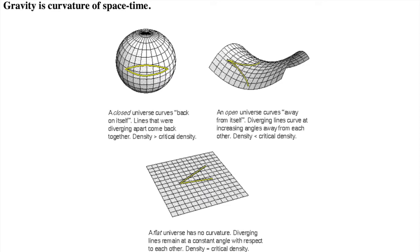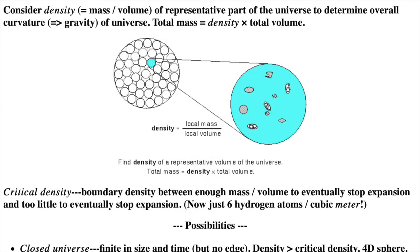The universe's curvature and therefore its fate was determined at the start of the expansion. To find how much gravity there is in the entire universe, we look at the density of a representative part of the universe. The total mass of the universe will be the density multiplied by the total volume.